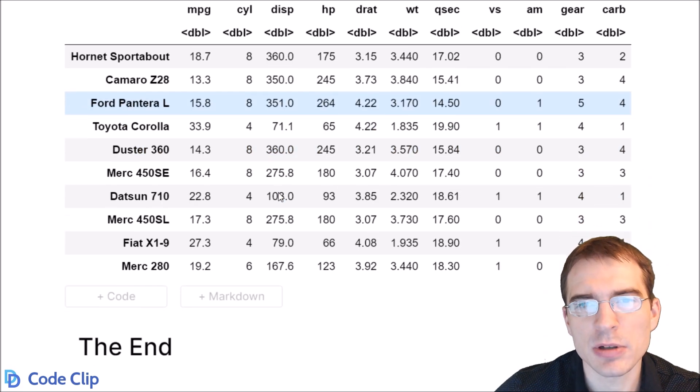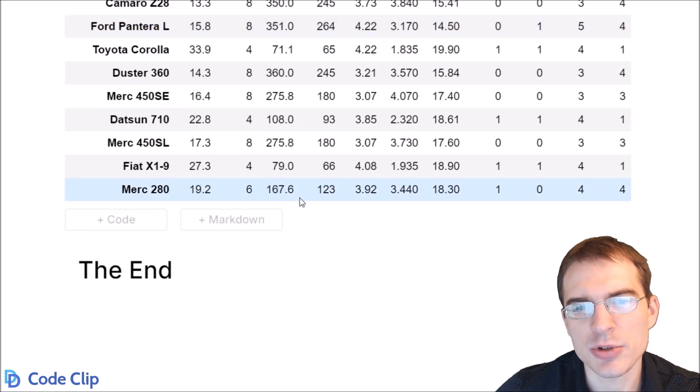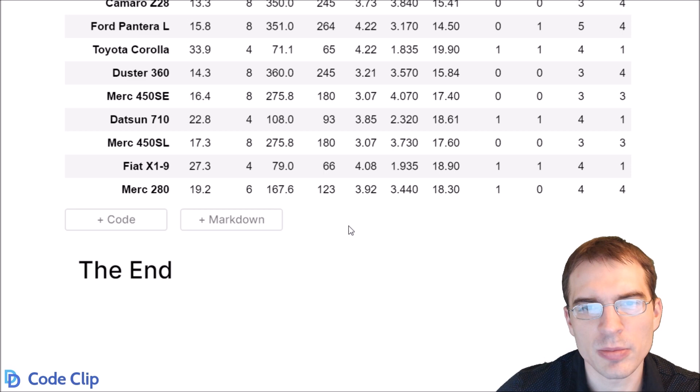So those are some examples of how to generate random numbers in R, as well as use some random number generation to sample rows from a data frame.